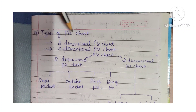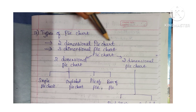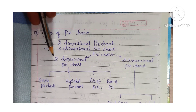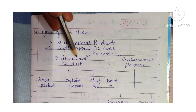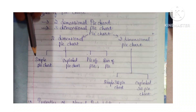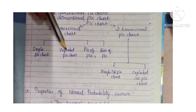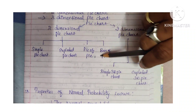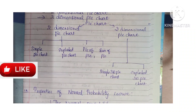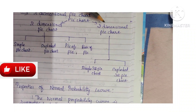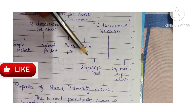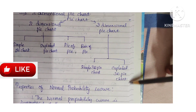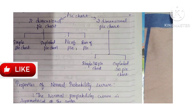Types of pie chart: two-dimensional pie chart and three-dimensional pie chart. The two-dimensional pie chart is divided into simple pie chart, exploded pie chart, pie of pie, and bar of pie. The three-dimensional pie chart is divided into simple 3D pie chart and exploded 3D pie chart.